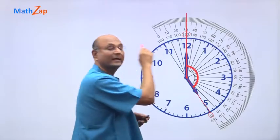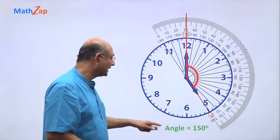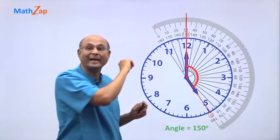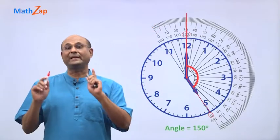So this angle is 150. So the angle between the hour hand and the minute hand is 150 degrees.